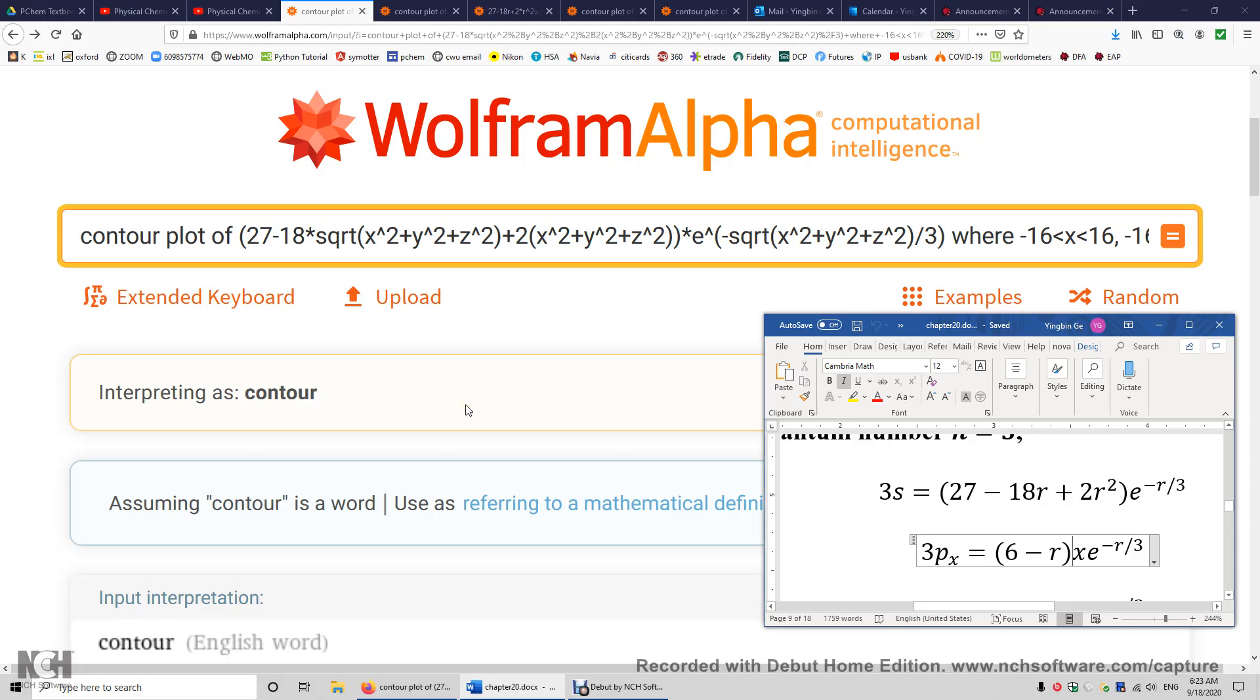In this video, I will draw the 3s and 3px atomic orbitals in the hydrogen atom using WolframAlpha.com.